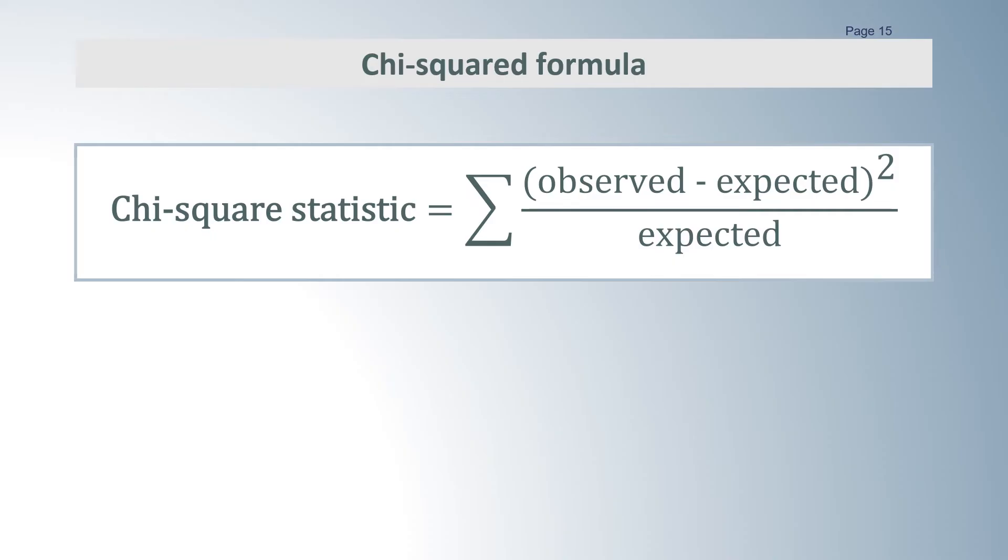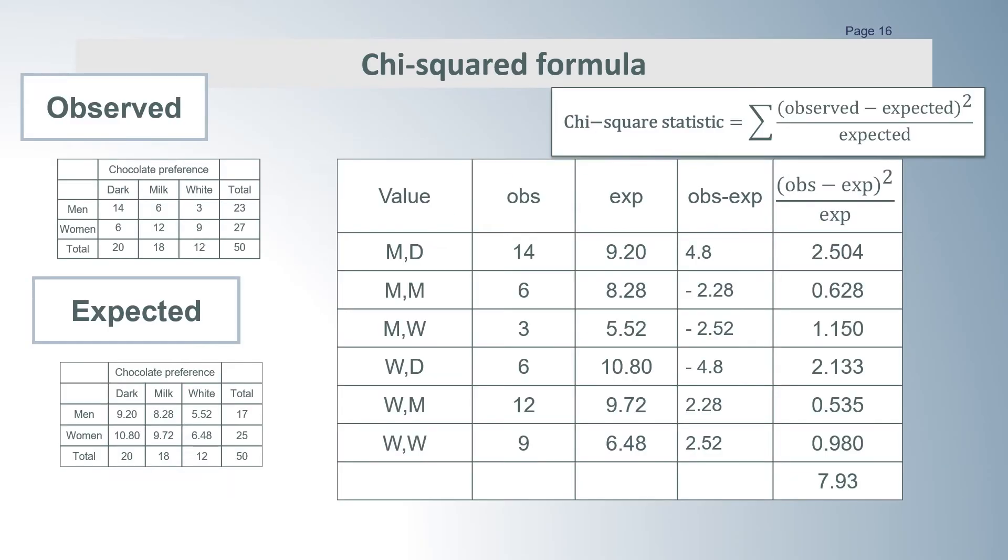This formula is also useful for seeing if values are distributed as expected in different tests. This table shows the calculations. The arrows show where the numbers come from. The chi-squared statistic is 7.93.